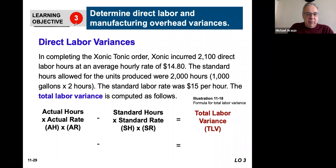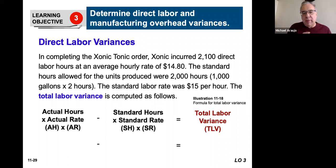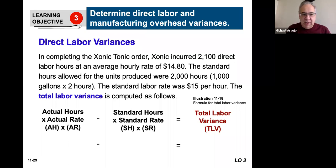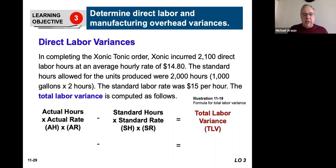Learning Objective 3 continues what we looked at in Learning Objective 2, where we're going to be looking at variances between the price and the quantity, but this time we're going to do it for labor. Learning Objective 2, we did it for direct materials. So all of those concepts will just repeat themselves here, so if you've got a better understanding of that, it's going to help you here.